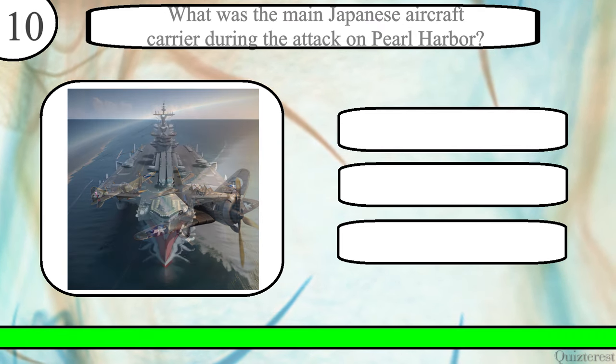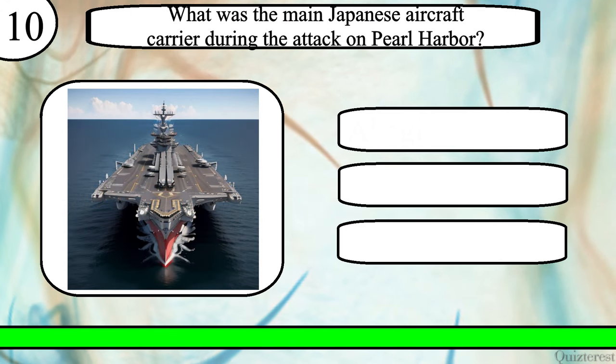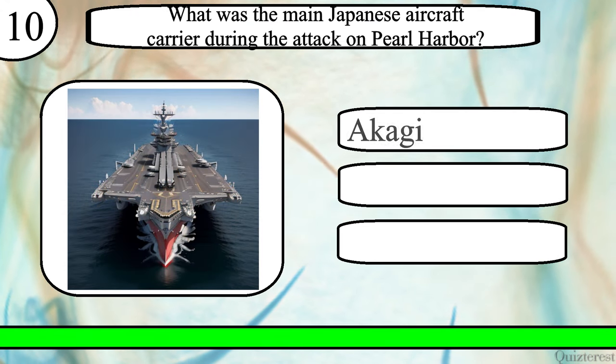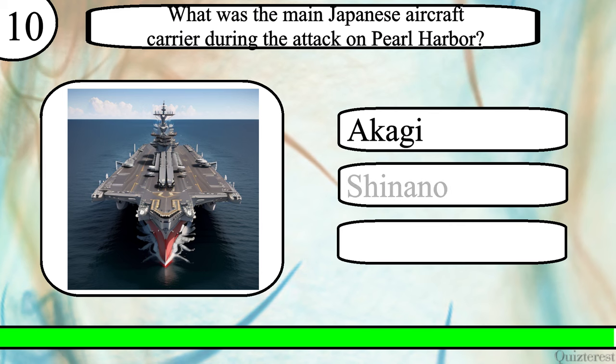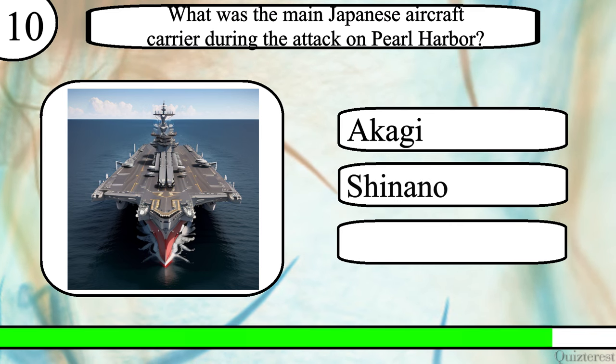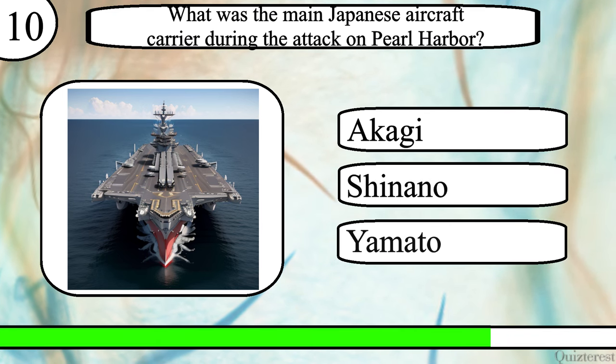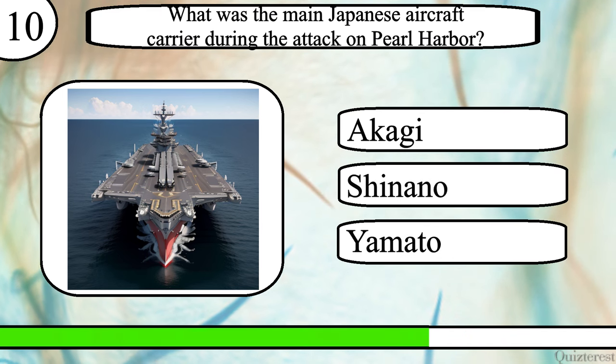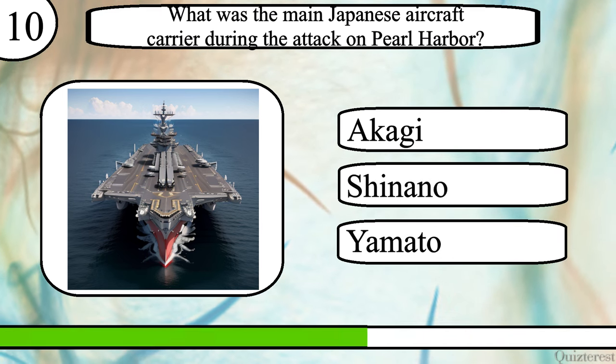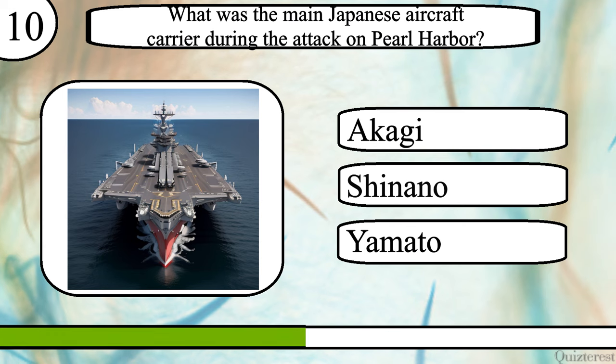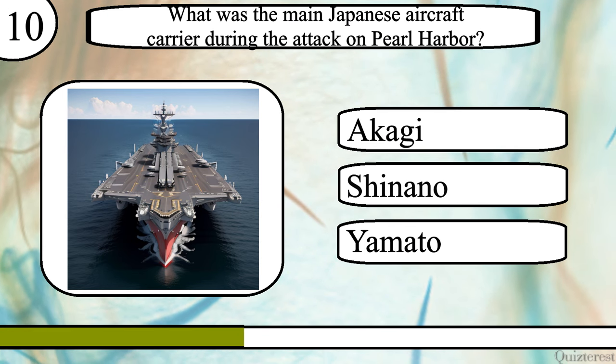Question 10. What was the main Japanese aircraft carrier during the attack on Pearl Harbor? Akagi, Shinano, or Yamato?